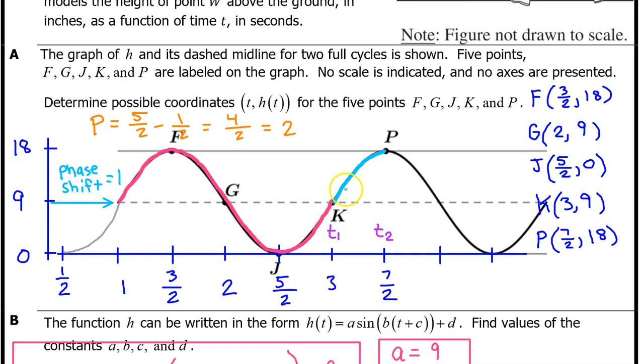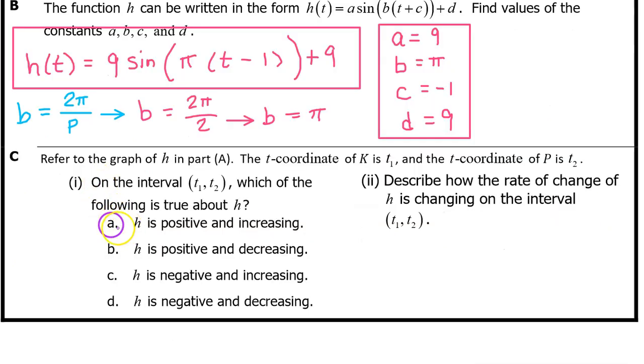The interval from t1 to t2 is this interval right here. On this interval, the output values are positive. They are between positive 9 and positive 18. Also, h of t is increasing on this interval because from left to right, the values are rising. So, h of t is positive and increasing on the interval from t1 to t2. So, the answer is A.